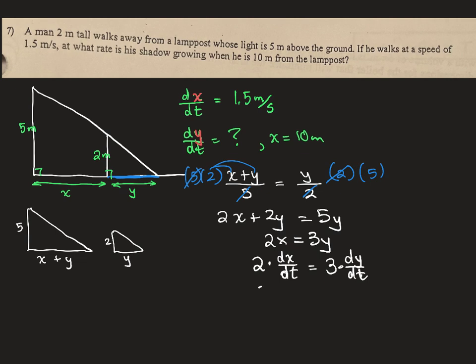All right, now we sub in what we have. We know dx/dt is 1.5. And we do not know dy/dt, but that's okay. We're not really using our x equals 10, are we? Well, that just means it is a constant rate that the shadow's changing.